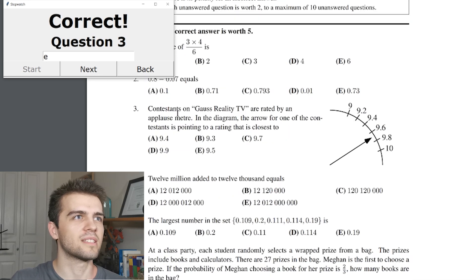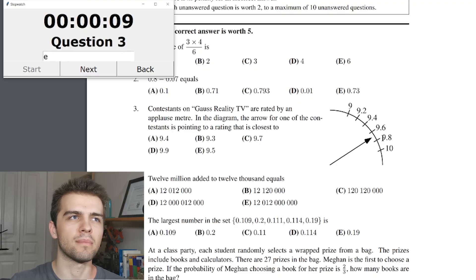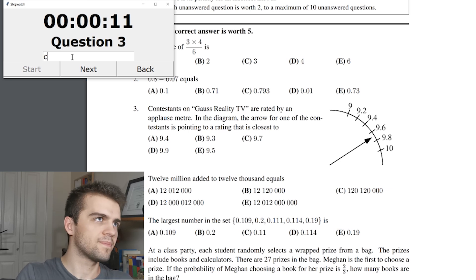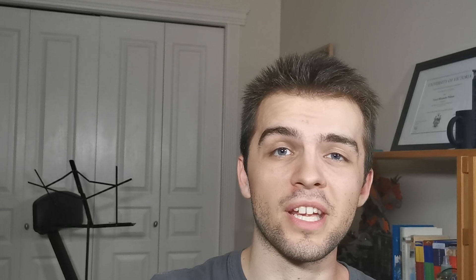Alright, question three. Contestants on Gauss Reality TV are rated by an applause meter. In the diagram, the arrow for one of the contestants is pointing to a rating that is closest to, I would say, 9.7. It's right in the middle there. Let's go with C. Alright, we're home safe so far. This is going to get a lot harder, by the way. You start getting into the later questions and it gets more and more difficult.